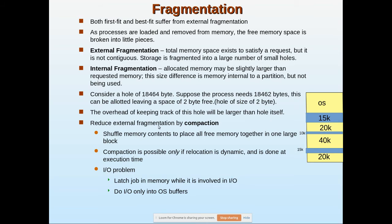Consider this example: suppose the process needs 18,462 bytes — this can be allocated, leaving a space of 2 bytes free. If this happens repeatedly, tracking all these small leftover memory spaces is itself a big overhead, even though adding them together might be enough for another process allocation.